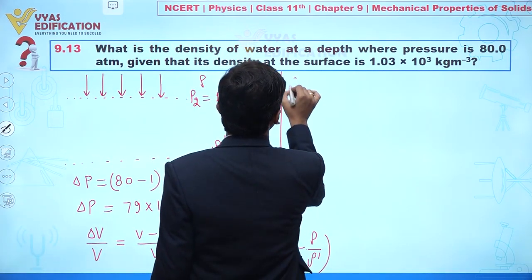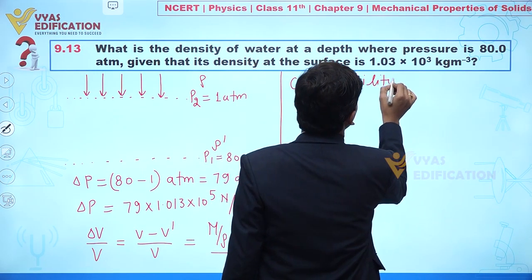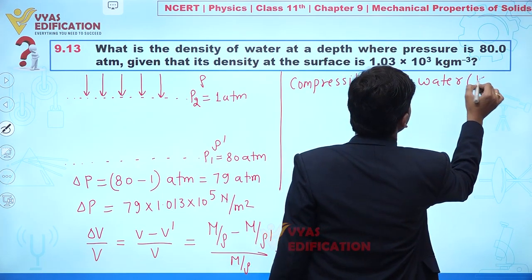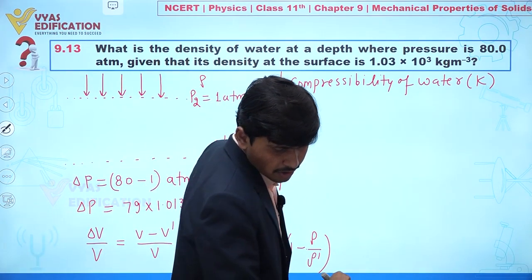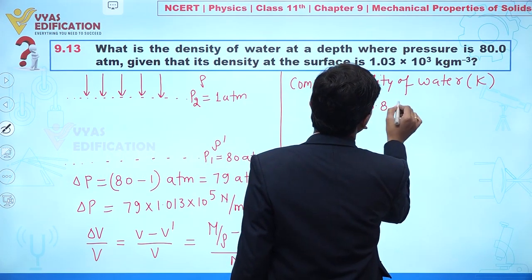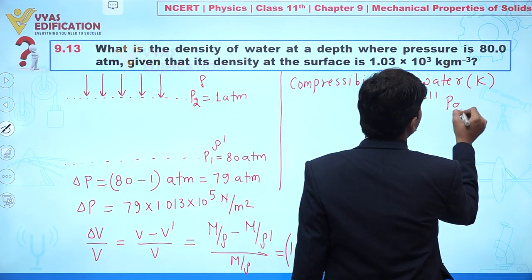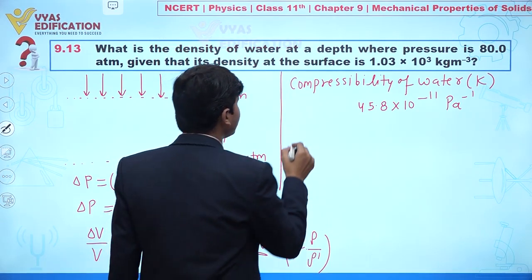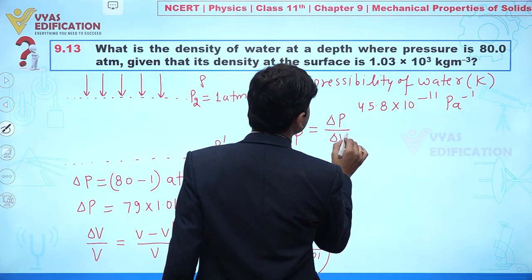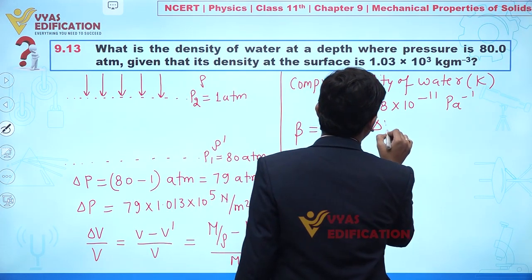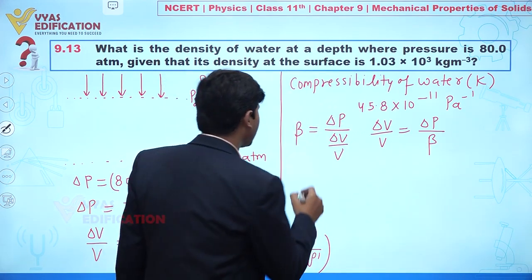Compressibility of water is represented by k, and its value is given as 45.8 × 10⁻¹¹ Pa⁻¹. We also know bulk modulus B is given by ΔP divided by fractional change in volume. From this, fractional change in volume = ΔP / B.